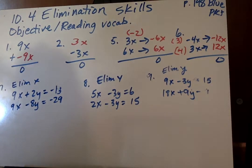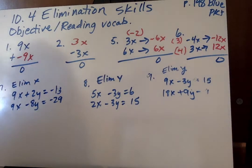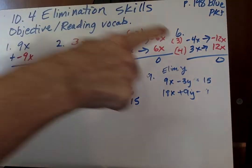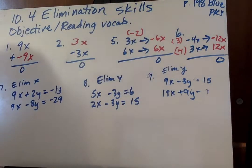We're going to use those properties to solve these equations. Some systems already have a zero pair for one variable. Others require you to use the multiplication property of equality, that's finding the least common multiple there, to create a zero pair. Number 1: find the least common multiple of the coefficients. Remember, coefficients are the numbers in front of the variables that you want to eliminate. Multiply all terms in the equation so the coefficients on the variable you want to eliminate are the zero pair of the least common multiple.